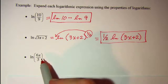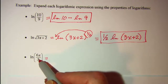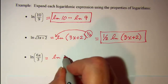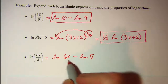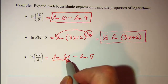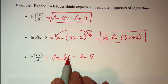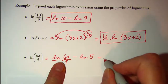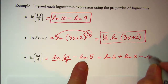Our next one — we have a few things going on. First, let's talk about the quotient here. If we have the ln of a quotient, we can subtract the ln of the denominator from the ln of the numerator. Then the numerator is a product, so I can use the second property, which says the log of a product equals the sum of the individual logs. So we can write this as ln 6 plus ln x, then minus ln 5.